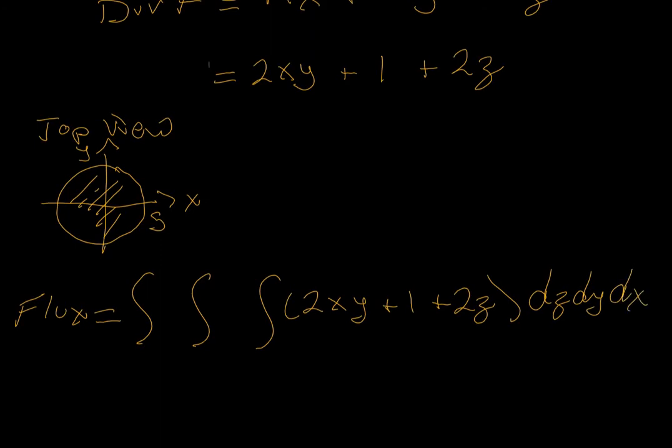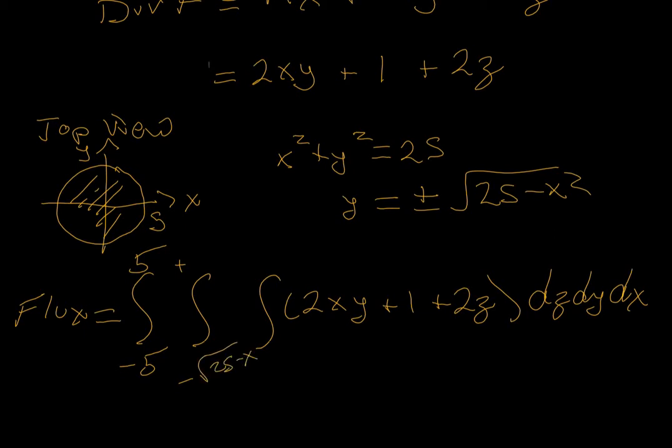The x boundaries for this hemisphere are from negative 5 to positive 5. And the y boundaries are from negative to positive, and it's this circle. The circle has radius 5, so y is plus or minus the square root of 25 minus x squared. That's the equation of the circle we see here. Negative square root of 25 minus x squared to positive square root of 25 minus x squared.